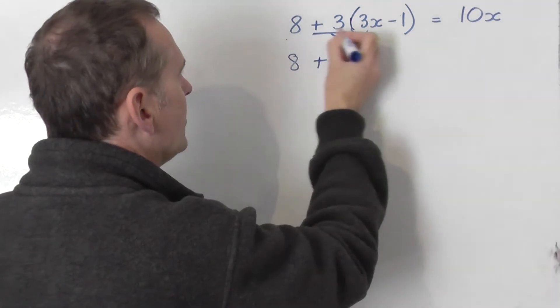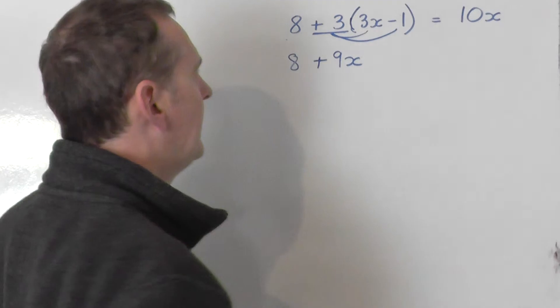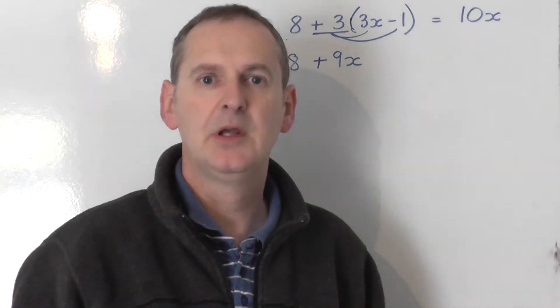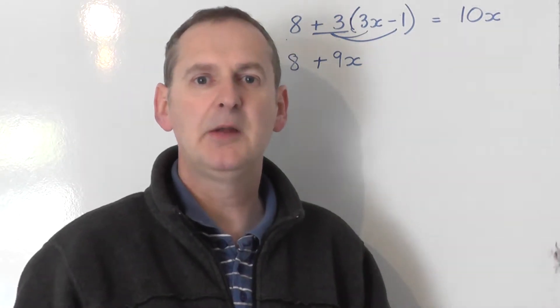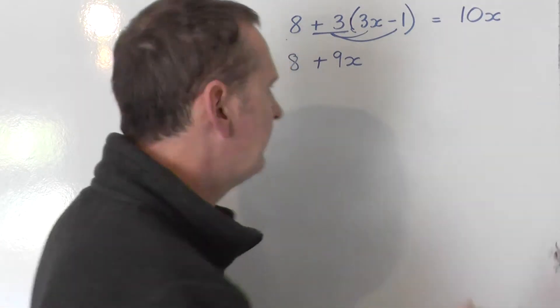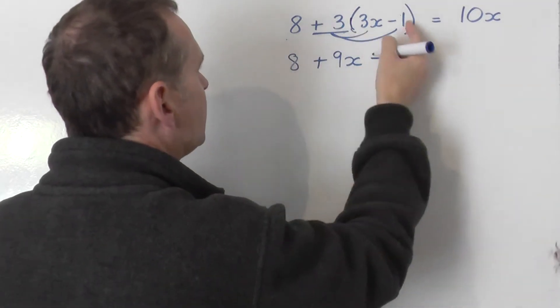Then I'm going to say positive 3 multiplied by negative 1. A positive multiplied by a negative is a negative. And 3 times 1 is 3.